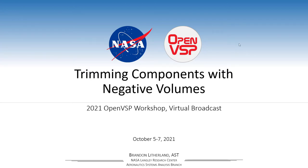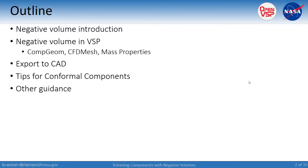In this presentation we'll talk about trimming components with negative volumes and leveraging some of the stuff Rob was talking about on Wednesday — dealing with CompGeom, CFD mesh, negative trimming, and the like — and show you some of the applications you can do with this. I'm Brandon Litherland from NASA Langley in the Aeronautic Systems branch. As an outline: we're going to look at negative volume, what it is and why it's useful, how OpenVSP leverages it in various operations, trimmed CAD export, and tips for conformal components.